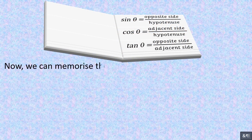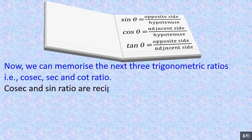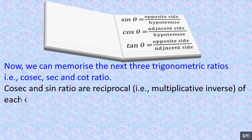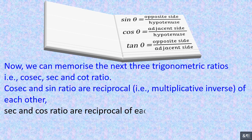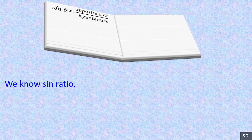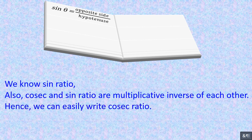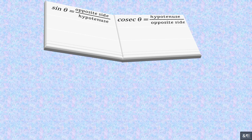Now we can memorize the next three trigonometric ratios: cosec, sec, and cot. Cosec and sine are reciprocals, i.e. multiplicative inverses of each other. Since sin θ = opposite / hypotenuse, we can easily write: cosec θ = hypotenuse / opposite side.